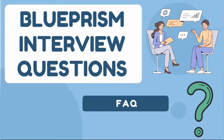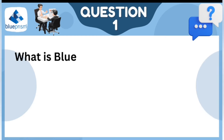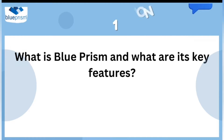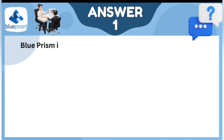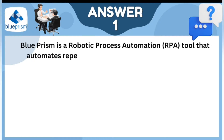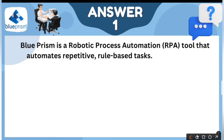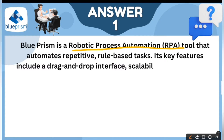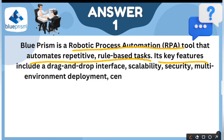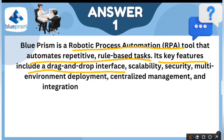Here we go. Question one: What is Blue Prism and what are its key features? Blue Prism is an RPA tool that automates repetitive role-based tasks. Its key features include a drag and drop interface, which is really useful, as well as scalability.